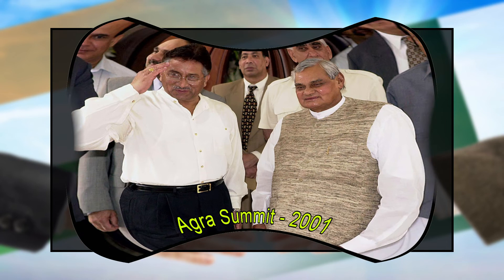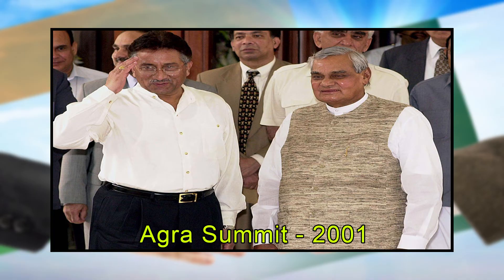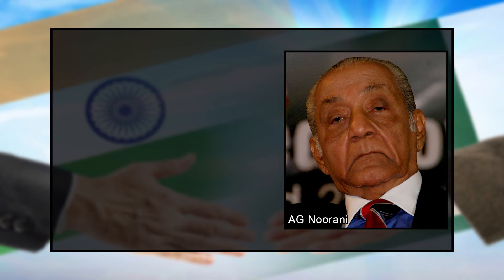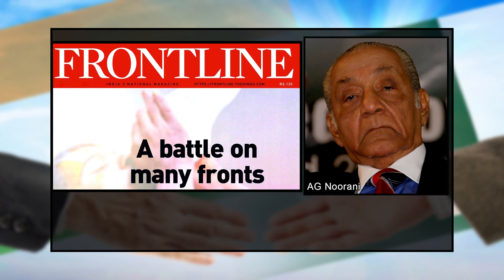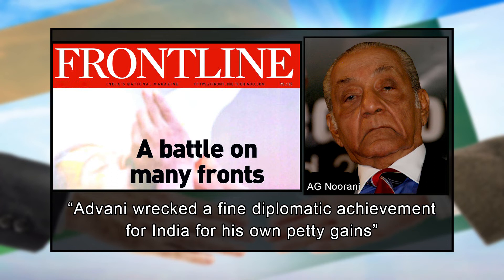It is said that war coverage by news channels stoked national sentiments in India. Two years after Kargil, India and Pakistan leaders met at Agra in mid-July 2001 for summit-level talks. The event started with high hopes but no breakthrough was achieved and the summit collapsed. According to author A.G. Noorani, the Agra summit was sabotaged at the 11th hour, with major blame apportioned to Indian Deputy Prime Minister L.K. Advani. Writing in Frontline magazine in August 2005, Noorani said: 'Advani wrecked a fine diplomatic achievement for India for his own petty gains.'